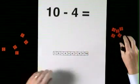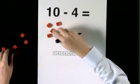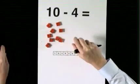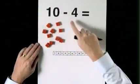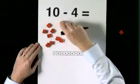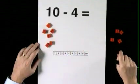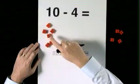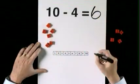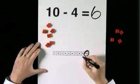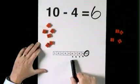10, take 4. 10, take 4. 5, 10. Take 4 — take 1, take 2, take 3, take 4. At least 1, 2, 3, 4, 5, 6. 10, take 4, makes 6. 10, take 1, 2, 3, 4, makes 6.